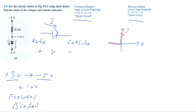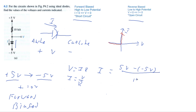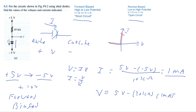The diode is going to behave like a short circuit. Using V = IR and Kirchhoff's Voltage Law, we can calculate the current to be (5V − (−5V)) / 10 kΩ = 1 mA. The voltage is equal to 5V − (10 kΩ × 1 mA) = negative five volts.